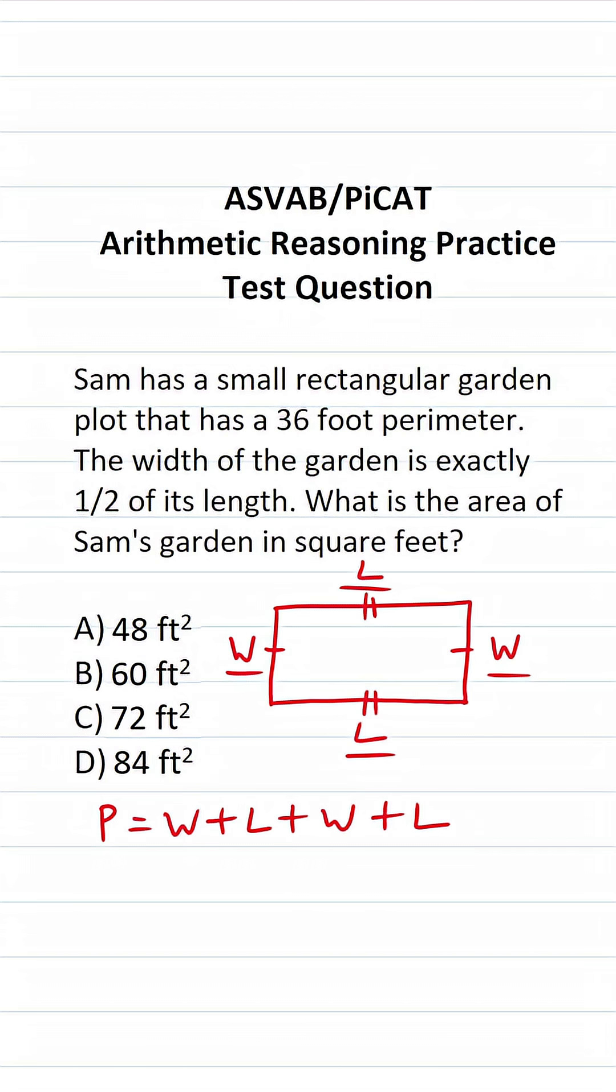Now, in this case, in order to solve this one, we also have to pay very close attention to this fact right here. Its width is exactly half of its length. So that means I could rewrite its width to be equal to one-half of its length, that is one-half L. And that means this width is also going to be one-half L. So wherever we see W in the perimeter formula, we're going to replace it with one-half L. So this becomes one-half L plus L plus one-half L plus L.